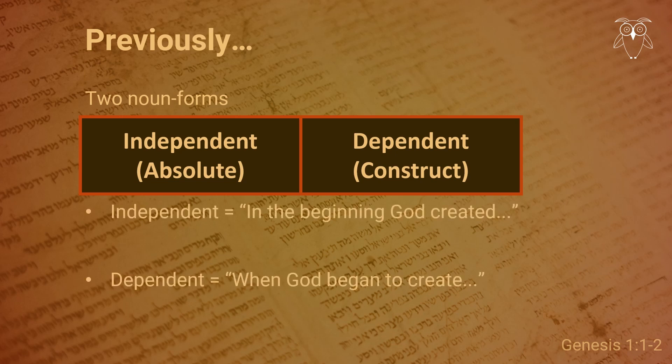If independent, you would get the familiar 'In the beginning God created.' But if dependent, you might translate something like 'When God began to create.' The first, independent interpretation, doesn't cause any immediate problems when you remember the completed aspect of the verb. The second, dependent interpretation, however, will have to see the entire creation story of Genesis 1 as the completed action.